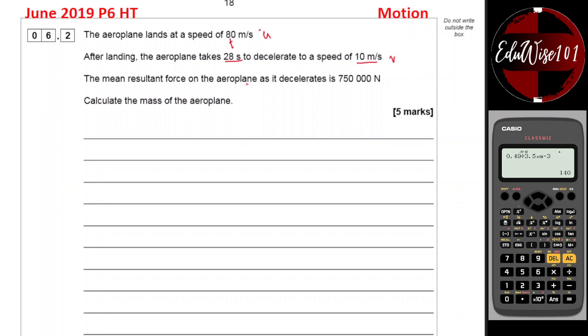Calculate the mean resultant force on the airplane as it decelerates is 750,000 Newton. Calculate the mass of the airplane. In order to calculate the mass of the airplane, you will need the equation F equals ma. Now, the force is given here. The mass is what you're trying to calculate. Acceleration, you have to work it out from the values that are given here. So let's find the acceleration first.